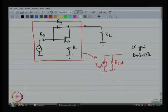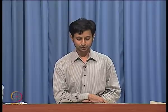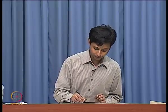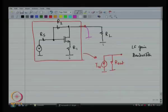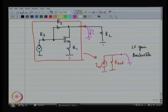To find the Norton equivalent current, we use the short circuit experiment. What experiment do we do? We short the output to ground and see how much current is flowing there — that tells me the value of I_n. If you do it here, I_n will go through the short circuit. That is why we use the short circuit experiment. So we are going to do the short circuit experiment.